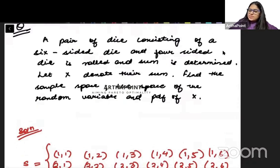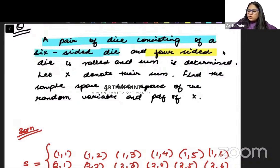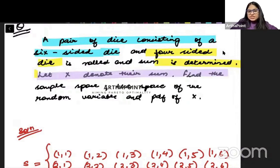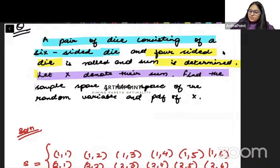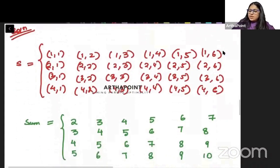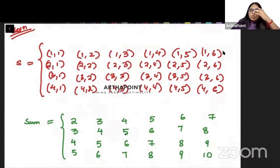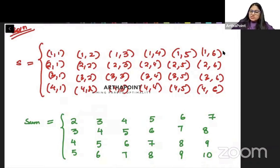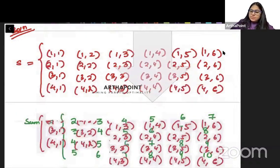Now let us take the next question. There is a pair of dice consisting of a 6-sided die and a 4-sided die, which are rolled and the sum is determined. Let X represent this sum. Find the sample space, the sample space of the random variable, and the PDF of X.